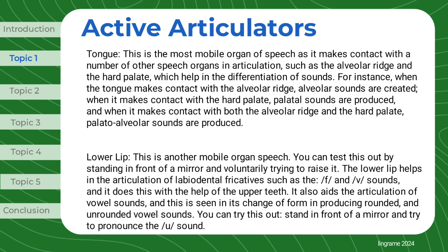The lower lip is another mobile organ of speech. You can test this out by standing in front of a mirror and voluntarily trying to raise it. The lower lip helps in the articulation of labiodental fricatives such as the /f/ and /v/ sounds, and it does this with the help of the upper teeth. It also aids the articulation of vowel sounds, as seen in its change of form in producing rounded and unrounded vowel sounds.